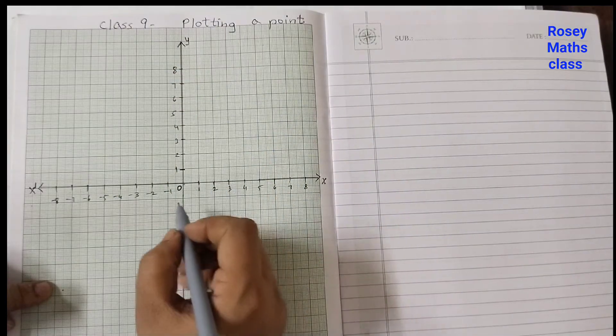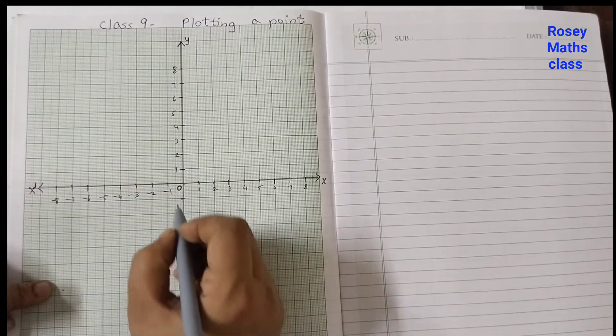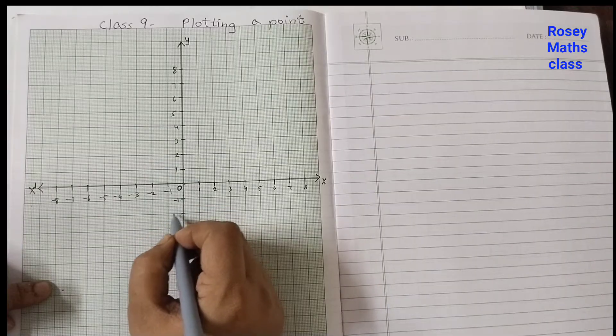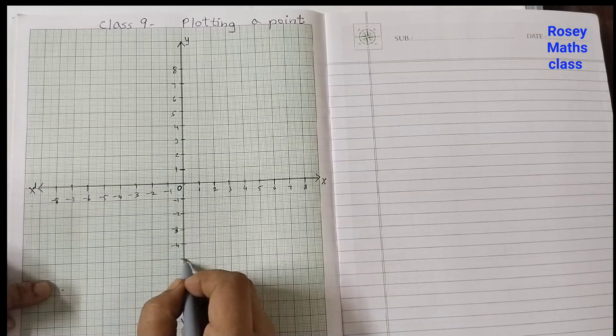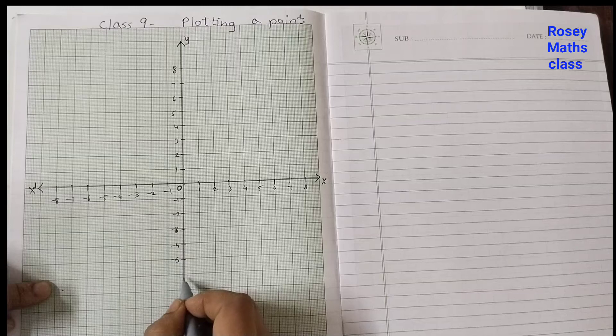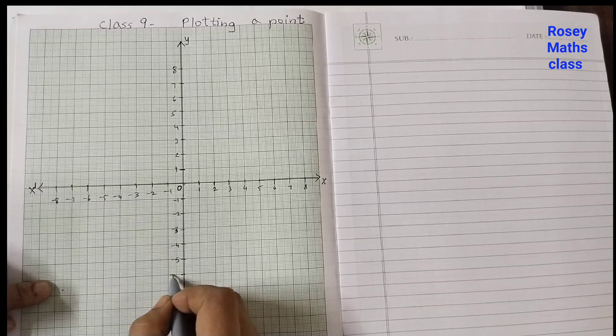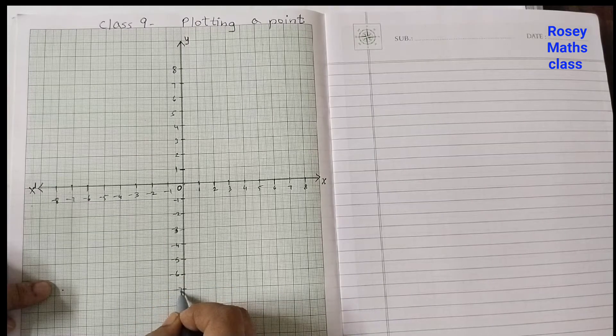Minus one, minus two. You have learned about this in your earlier grades, but maybe you have not used the graph paper. Minus six, minus seven, minus eight. This is what we need for plotting a point.